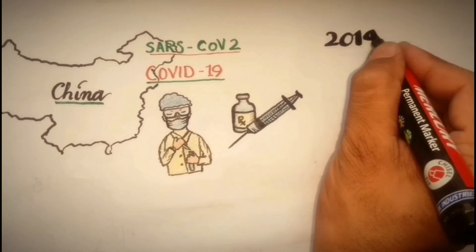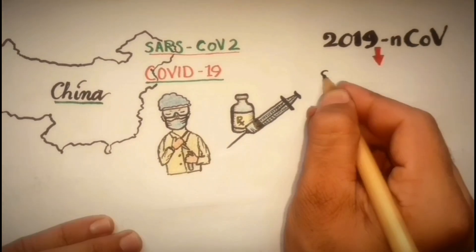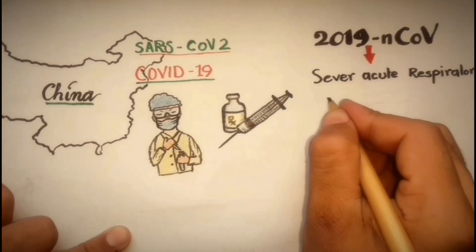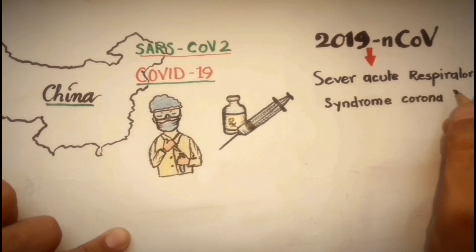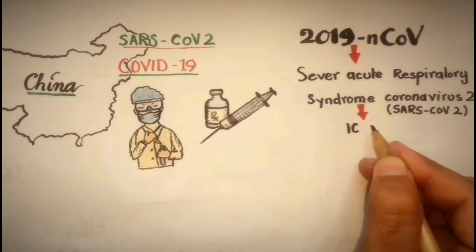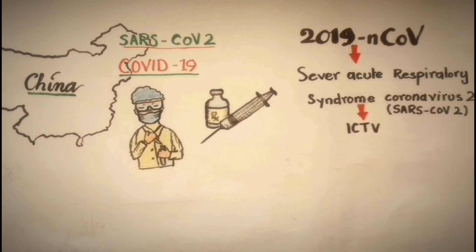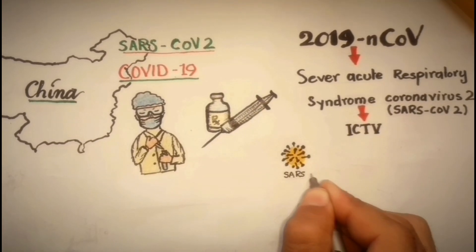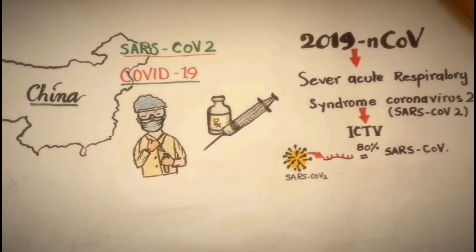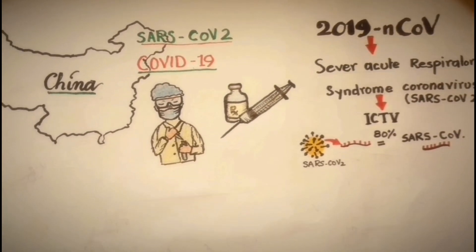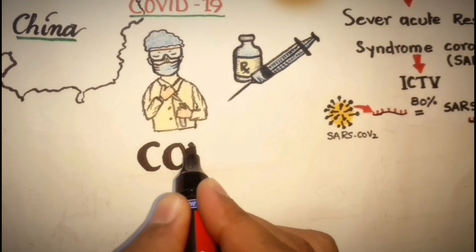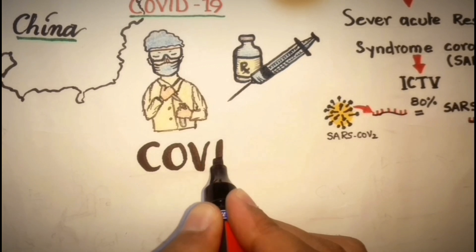The novel virus was initially named 2019 novel coronavirus, which was changed to severe acute respiratory syndrome coronavirus 2, or SARS-CoV-2, by the International Committee on Taxonomy of Viruses (ICTV), because the genetic sequence of this virus showed more than 80 percent identity with SARS coronavirus. The disease caused by this virus was termed COVID-19, which stands for coronavirus disease 2019.